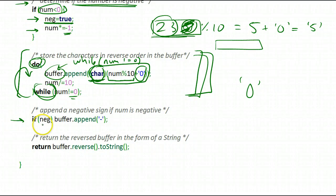Right here, I'm checking that after I've done this process, I stored all my characters in the buffer. Now is the time to check if it was a negative number. If it's a negative number, all I have to do is append a negative sign.